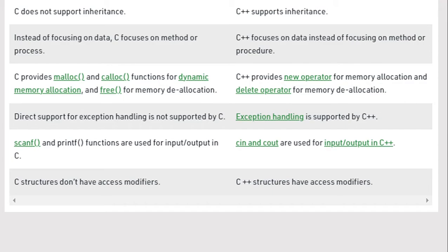Exception handling is not supported in C but is supported by C++. scanf and printf functions are used for input-output in C, while cin and cout are used for input-output in C++. C structures do not have access modifiers, whereas C++ structures have access modifiers.